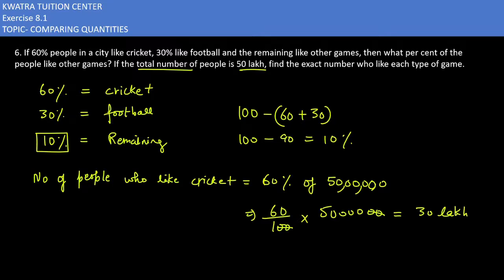Now, what you can do is you can find the number of people who like football. Football percentage is how much percentage? 30%. 30% of 50 lakh. 30 by 100 into 50 lakh. So it will be nothing but 15 lakh.